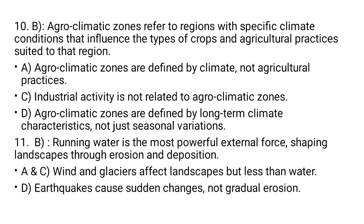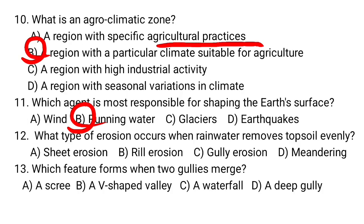Sheet erosion is a type of erosion that occurs when rainwater removes topsoil evenly — A is the correct answer. Rill erosion and gully erosion create small and large channels respectively. Meandering describes river bends, not erosion.